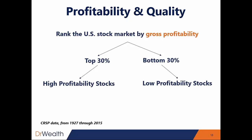There's outperformance in high profitability stocks. This is a lot more intuitive — you want to buy higher quality stocks, it should give you higher returns. The difference is about 3.1% per year if you buy higher profitability stocks versus low profitability stocks.